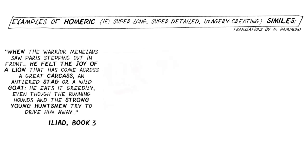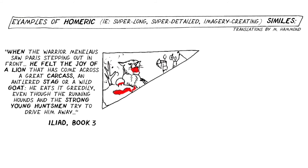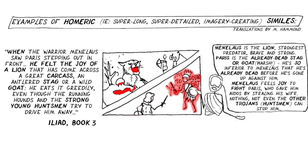Another simile comes from Iliad book 3: 'When the warrior Menelaus saw Paris stepping out in front, he felt the joy of a lion that has come across a great carcass — an antlered stag or a wild goat — he eats it greedily, even though the running hounds and the strong young huntsmen try to drive him away.' Menelaus is the lion, strongest predator, brave and strong. Paris — the guy he's about to go up against, who stole his wife — is the already dead corpse of a stag or goat. He is so inferior to Menelaus that he's already dead before the fight, and he's no lion — he's the prey. Nothing, not even the other Trojans represented by the huntsmen, can stop Menelaus.